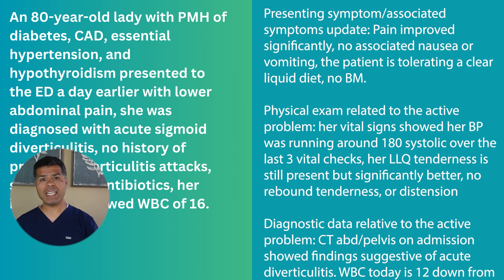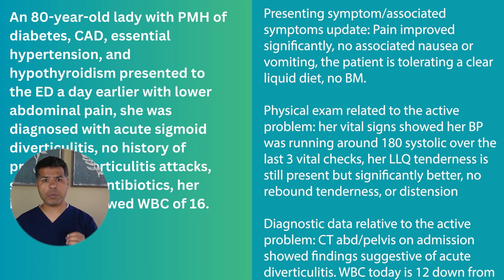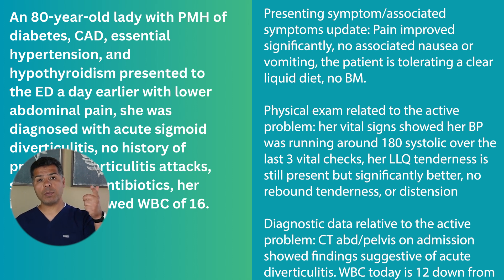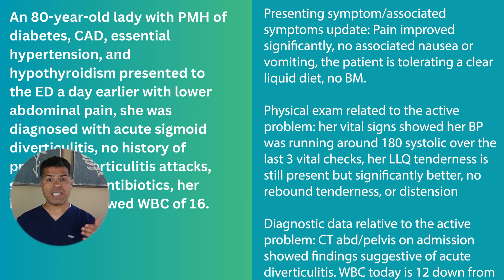Symptom update: the pain improved significantly, no associated nausea or vomiting, patient is tolerating clear liquid diet, no bowel movement. Relative physical exam: vital signs showed blood pressure running around 180 systolic over the last three checks; left lower quadrant tenderness is still present but significantly better; no rebound tenderness or distention. Diagnostic data: CT abdomen and pelvis on admission showed findings suggestive of acute diverticulitis; WBC today is 12 compared to 16 yesterday; the rest of CBC and CMP are unremarkable.